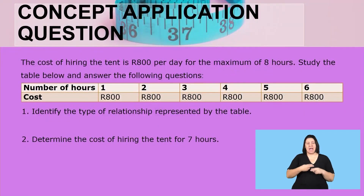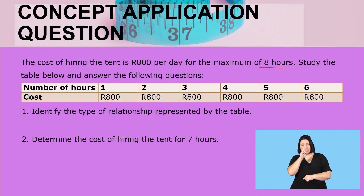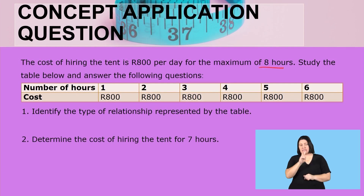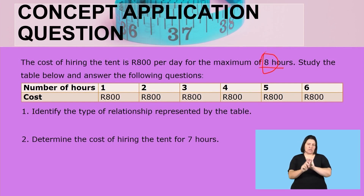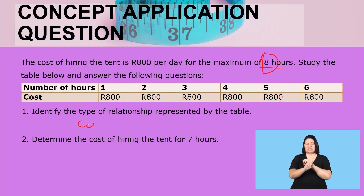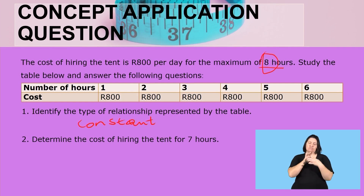Now let us get to the application. The cost of hiring the tent is 800 rent per day for a maximum of eight hours. Study the table and answer the following questions. You can see the cost remains the same until eight hours. Identify the type of relationship represented by the table. Because the cost is not changing, we call it a constant or fixed relationship.